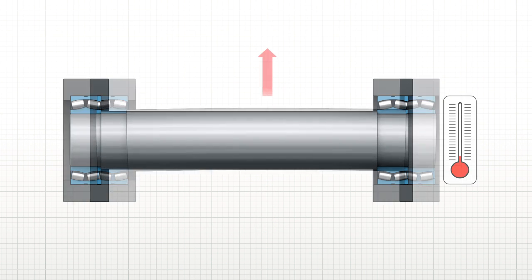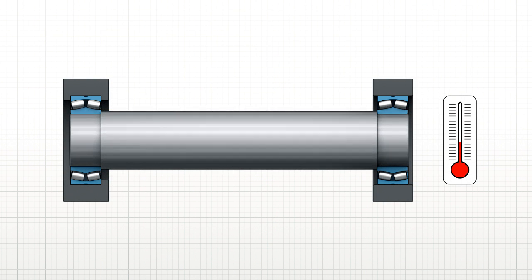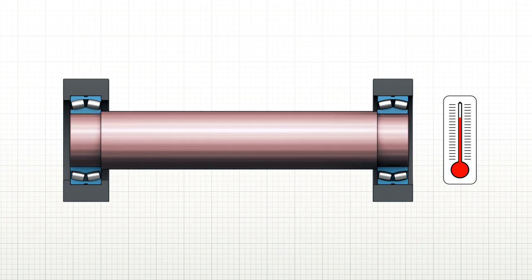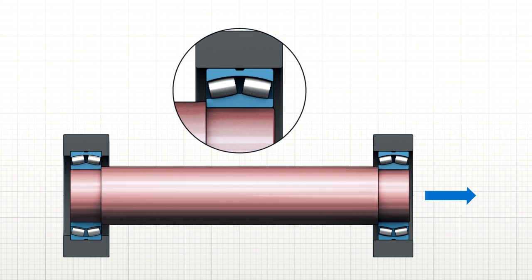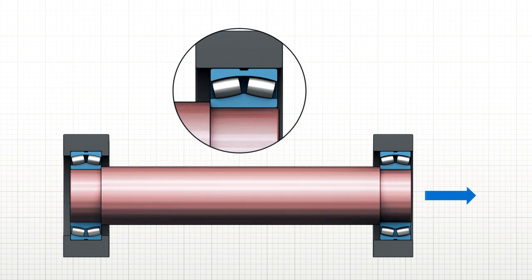In operation, shaft temperature rises above that of the housing. The non-locating bearing must slide in the housing. But forces required to overcome friction will induce additional loads, vibrations and increase operating temperature.